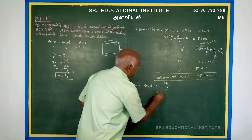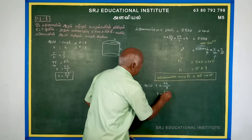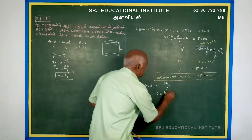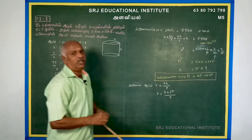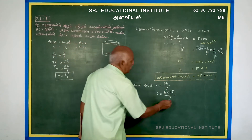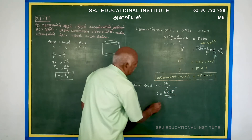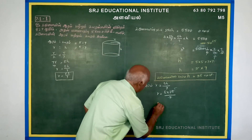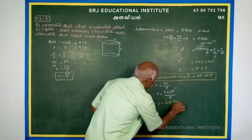Then r equals 5. 5x8x8. So r equals 5. 35x8x8. 7x8x8. 1x8x8. 5x8x8. What do you think about this? Then r equals 6. 25cm.